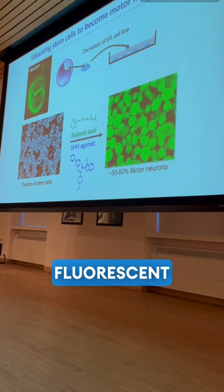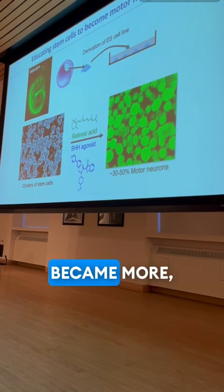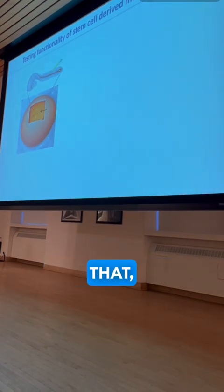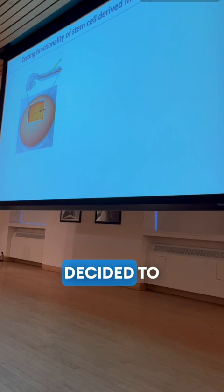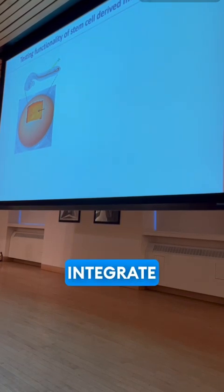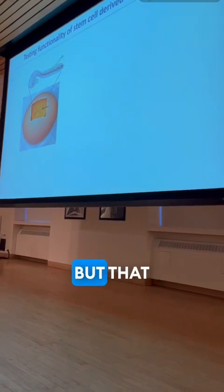Not only do these cells turn on the green fluorescent markers suggesting they became motor neurons, but we could even test their functionality. For that, I decided to transplant them back into the developing spinal cord and see whether they would integrate into the nervous system and perhaps innervate muscles.